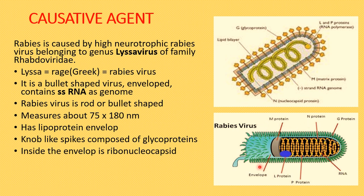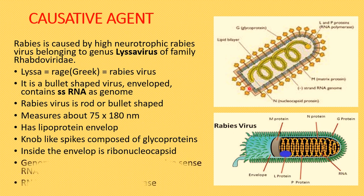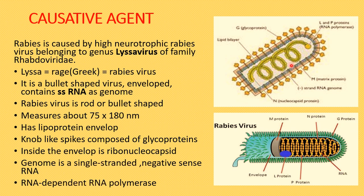The knob-like spikes are composed of glycoproteins — glycogen plus protein. These lollipop-shaped spikes are present on the envelope, which is a lipoprotein layer. Inside the envelope is a structure called the nucleocapsid. Because the genetic material is RNA, we call it the ribonucleocapsid. The genome is single-stranded RNA with negative sense, and it contains RNA-dependent RNA polymerase, which is essential for replication.